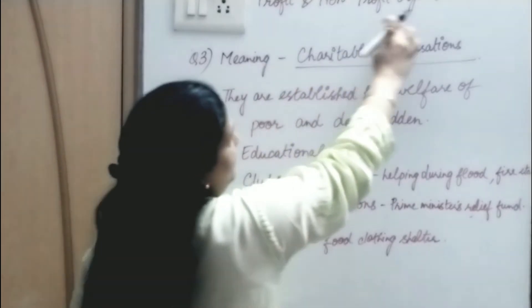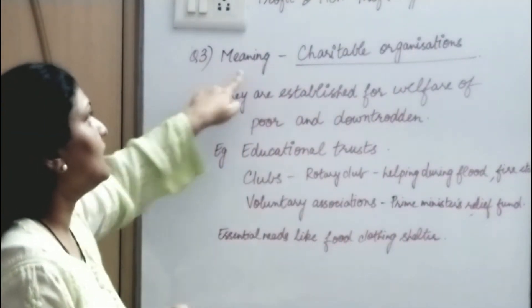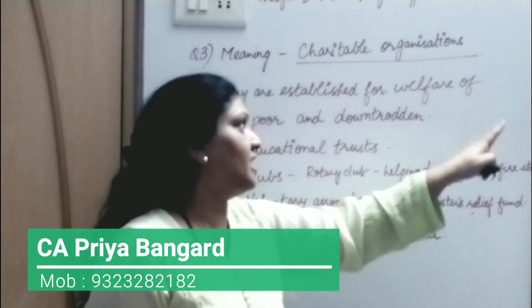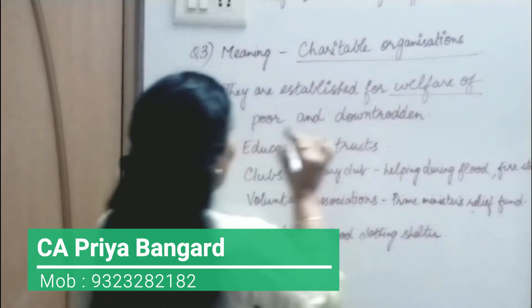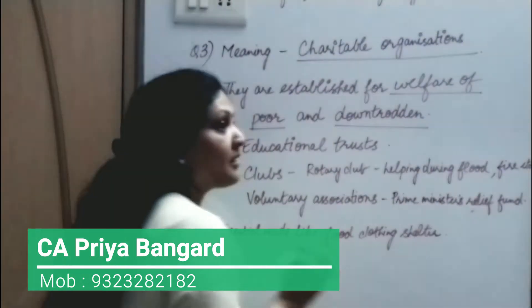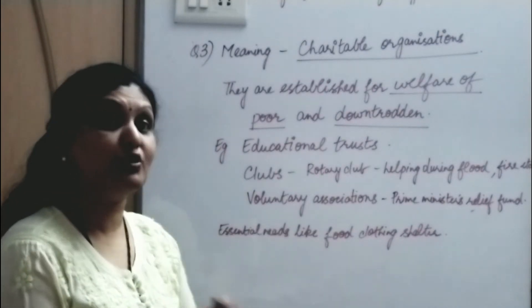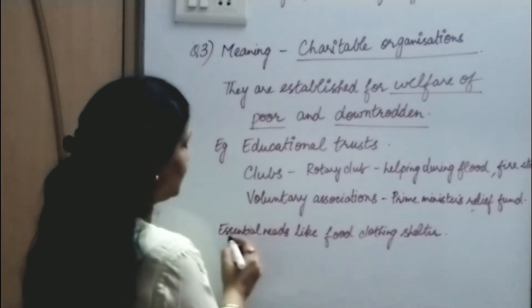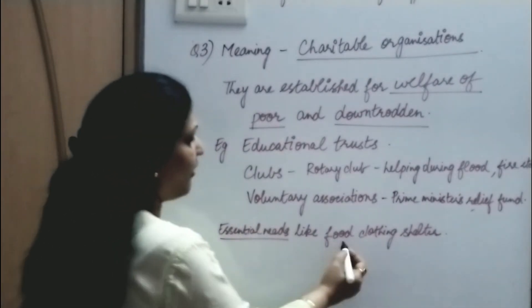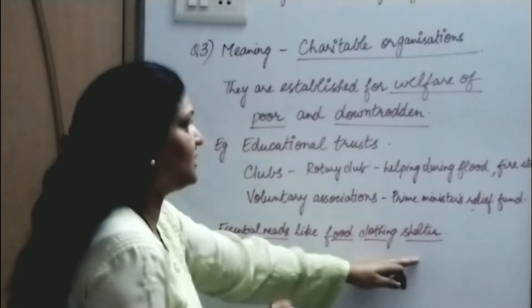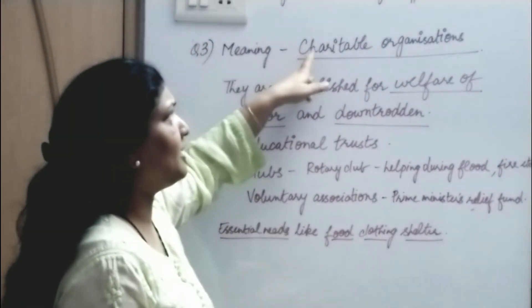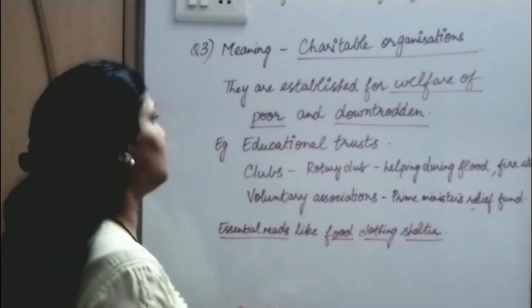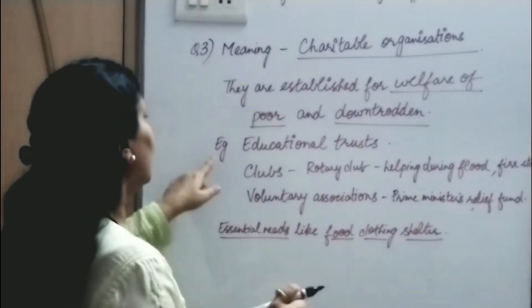Class 9th Commerce ICSE Chapter 3, Profit and Non-Profit Organization, Question 3: Meaning of Charitable Organizations. Charitable Organizations are established for the welfare of poor and downtrodden people. These organizations are made to help poor and downtrodden people, and their motive is not profit.